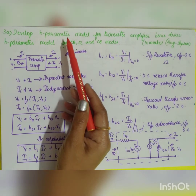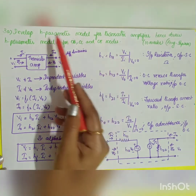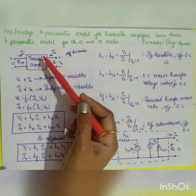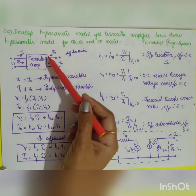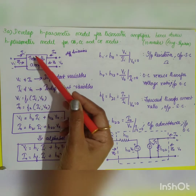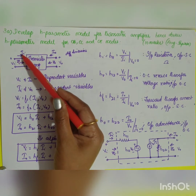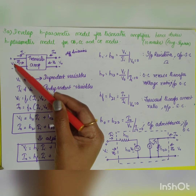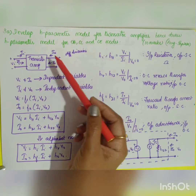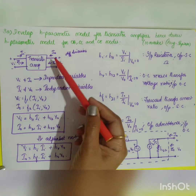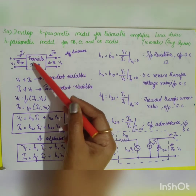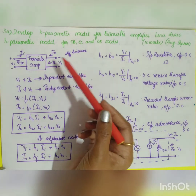We need to develop an h-parameter model for a transistor amplifier. A transistor amplifier is modeled as a two-port network. The input parameters are input current and input voltage, and the output parameters are output current and output voltage. The transistor amplifier is configured as a two-port device with four parameters.